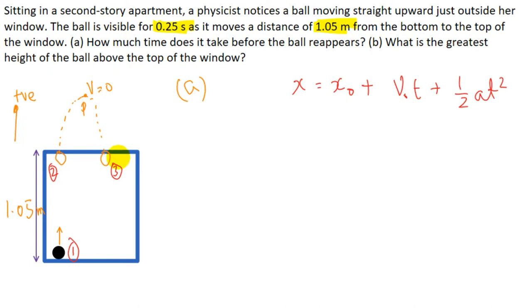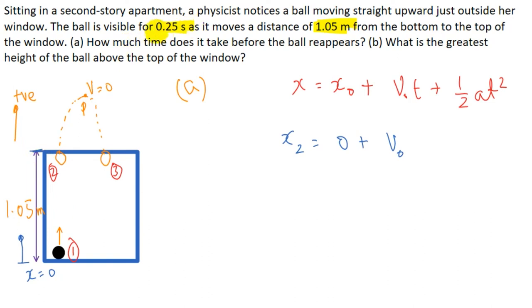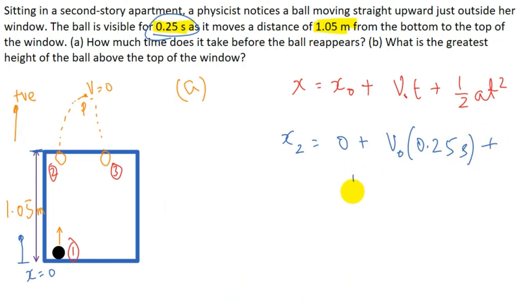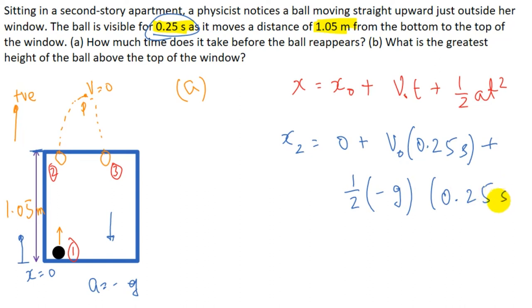Here x₂ is the final position and x₀ is the initial position. We are measuring distance from position one, so x₀ = 0. The time taken by the bowl to move from point 1 to point 2 is 0.25 seconds. Since the ball is in free fall, acceleration is always downward, so a = −g.